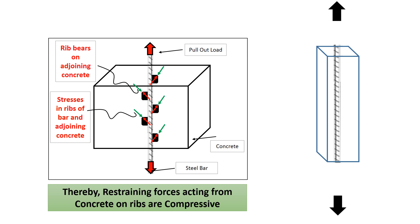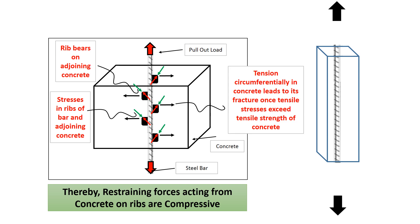One of the components of forces in surrounding concrete is circumferential tension, shown by black arrows. These act circumferentially, leading to fracture once tensile stresses exceed the tensile strength of concrete. This is the interlocking force, and there is a development of subsequent restraining force from concrete on steel. The other forces acting during bond action are chemical adhesion and friction — one being a chemical force and the other a physical one.